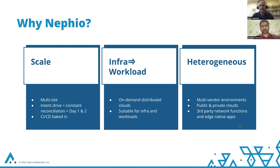There is constant reconciliation of state. If you're just a few sites, you can manually reconcile. But at this scale, you have to have constant automated reconciliation. Day one and day two operations are also taken care of by the same mechanism, which lends itself to scalability. CI/CD is baked in. It goes all the way from infrastructure to workload — on-demand distributed clouds, suitable for infrastructure and workloads. And finally, it's heterogeneous, meant for multi-vendor environments, handling public and private clouds, and a variety of third-party network functions and edge-native applications.